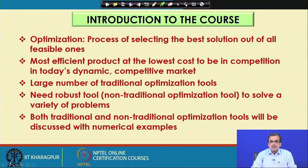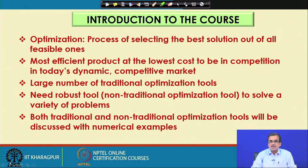Let me take one example. For this course, I have been given 20 hours of lecture. In 20 hours, I will have to teach this course. There are several ways in which I can teach this particular course, and out of all feasible ways, I will have to select the best one, so that I can give you the maximum in 20 hours. This is nothing but the task of optimization.